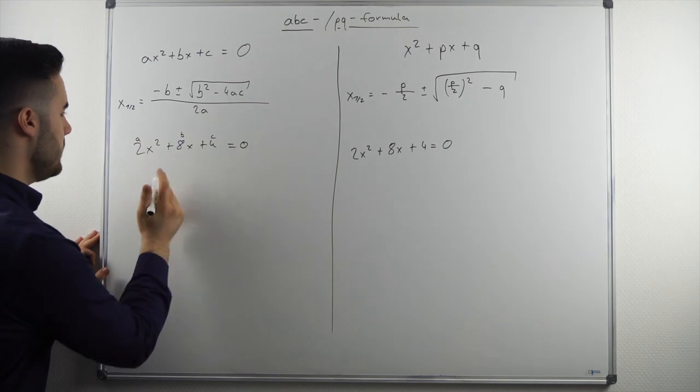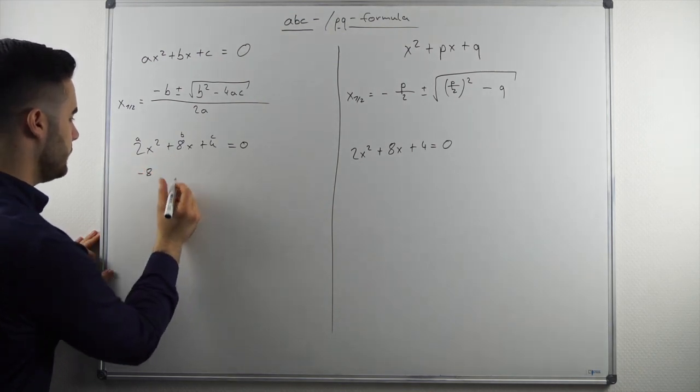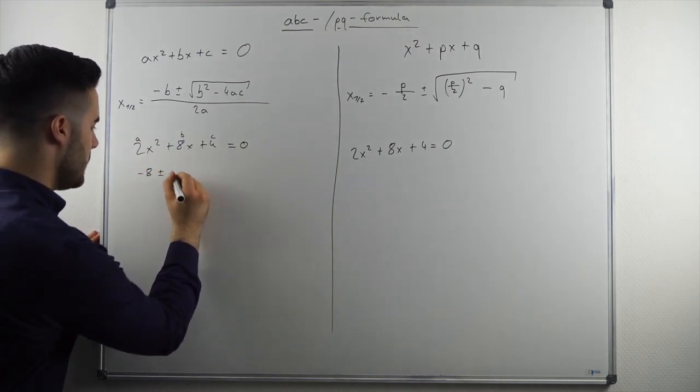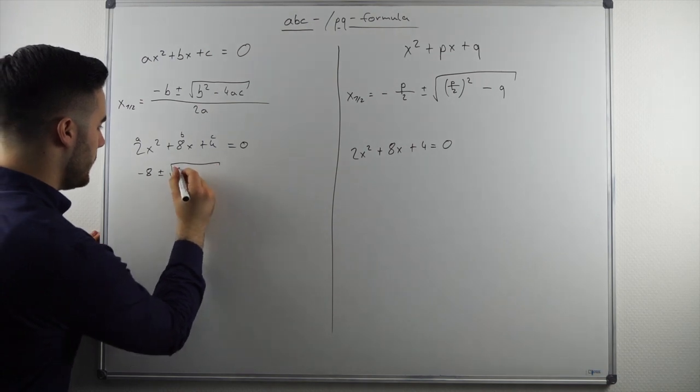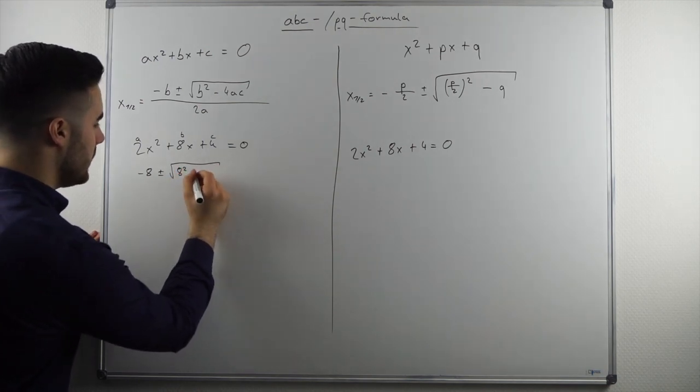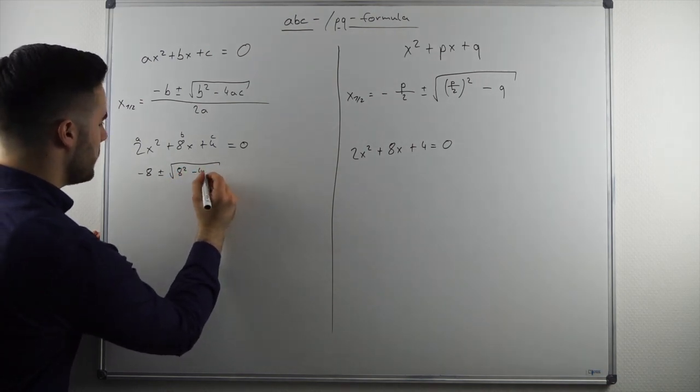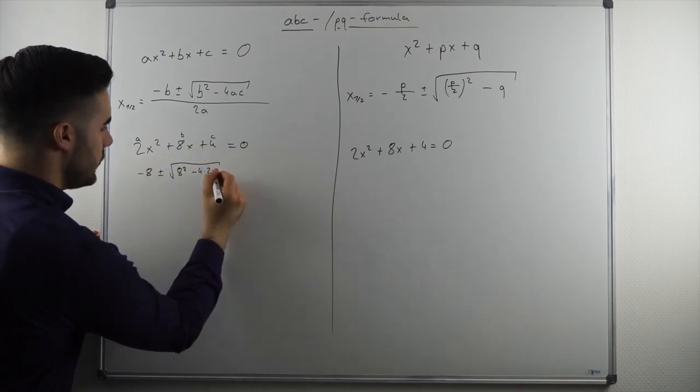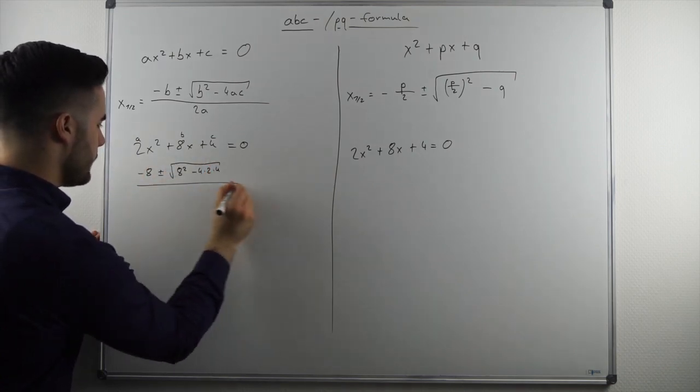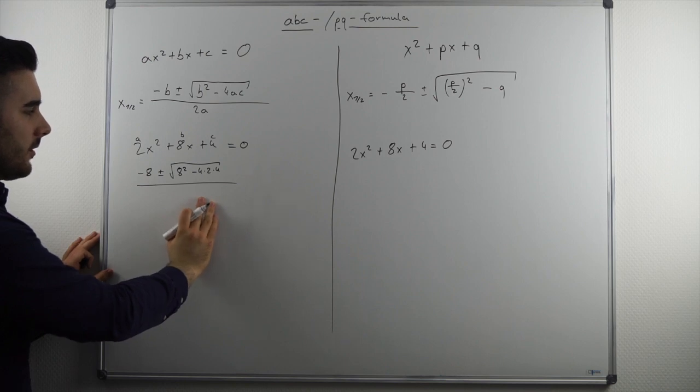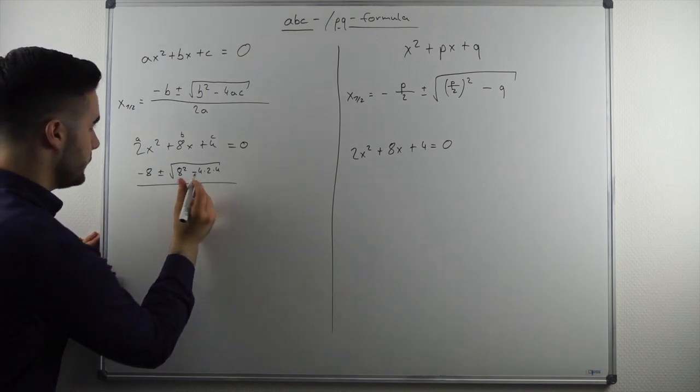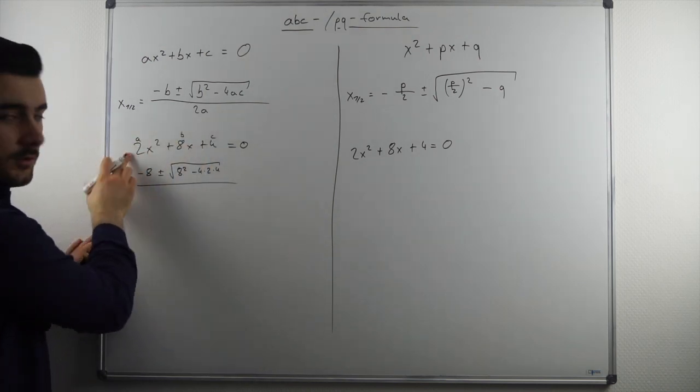That means we start off with b. So we have minus 8 plus minus the square root of 8 squared minus 4 times 2 times 4. And then the whole thing divided by 2 times in our case 2.